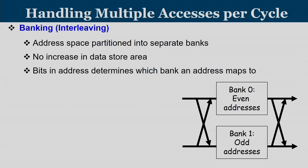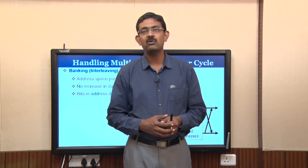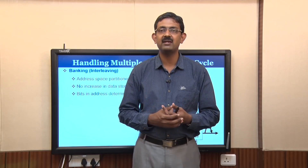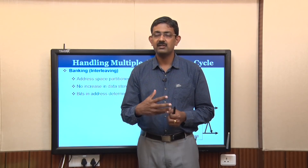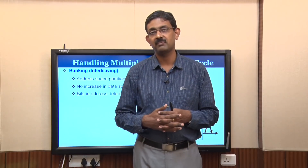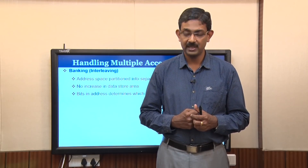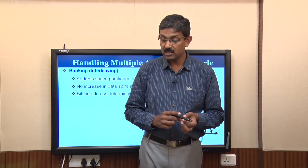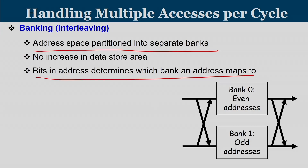This DRAM acts as primary memory for all processors and caches. In a multi-core environment, multiple processors work in parallel with their own private and shared caches, and there is a high possibility that these processors will have cache misses reaching DRAM at the same time. The address space is partitioned into separate banks, and bits in the address — most significant, least significant, or middle bits — indicate whether an address belongs to bank 1, bank 2, bank 3, and so on.